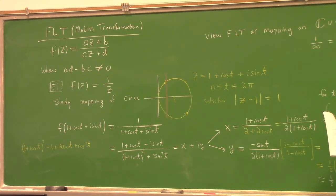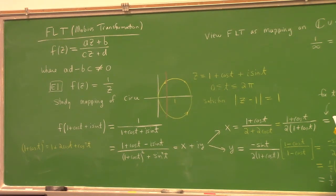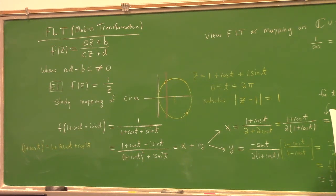The point of intersection of the sphere with the line that connects to the north pole is called capital X, Y, Z. That maps to a point on the complex plane z = x + iy.